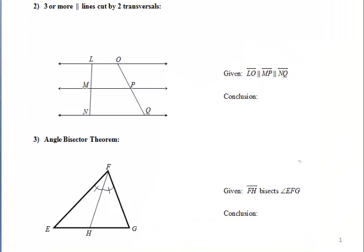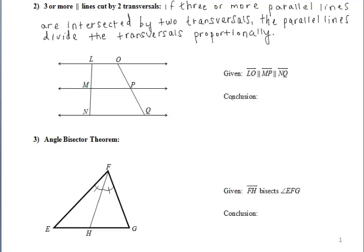The second theorem is the three or more parallel lines theorem, which states that if three or more parallel lines are intersected by two transversals, the parallel lines divide the transversals proportionally. Marking the three parallel lines based on the given information, those transversals are divided proportionally, so we can say that the ratio of LM to MN is equal to the ratio of OP to PQ — yellow to purple equals yellow to purple.